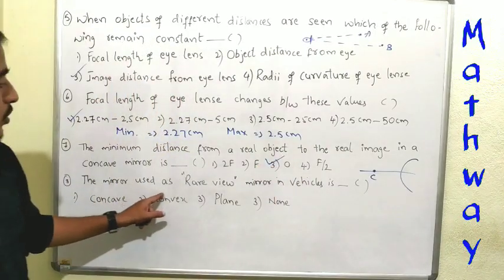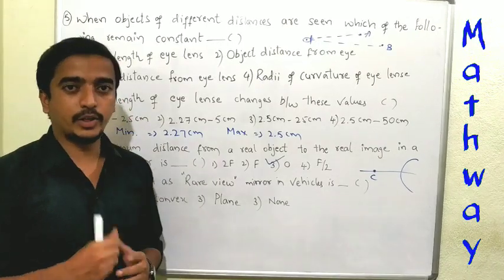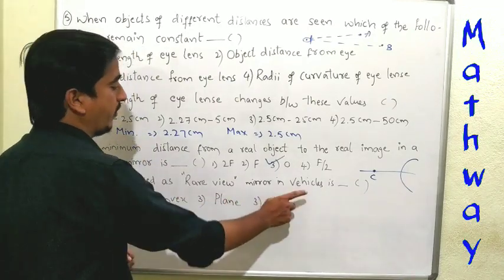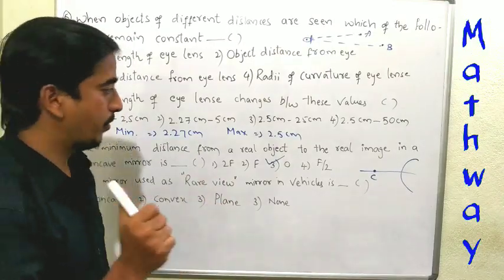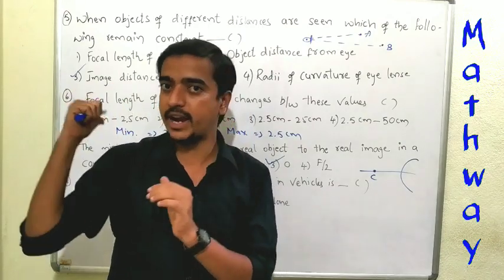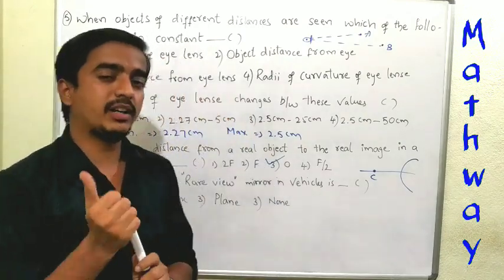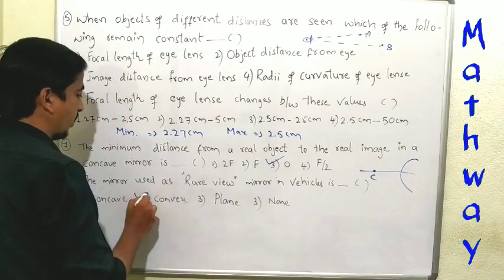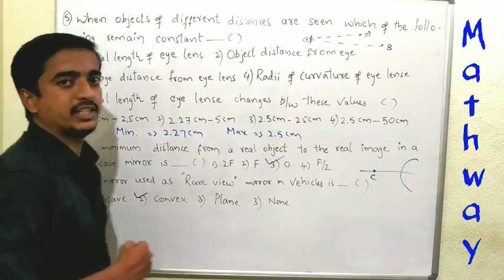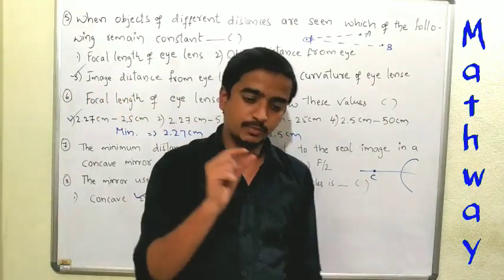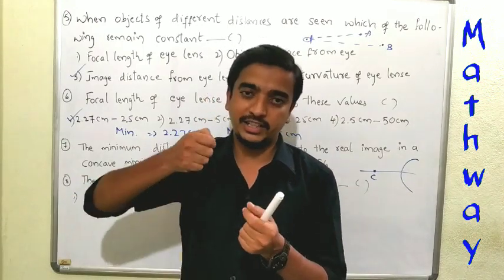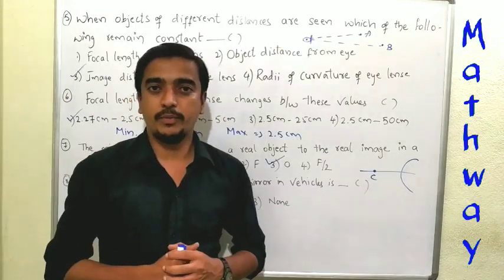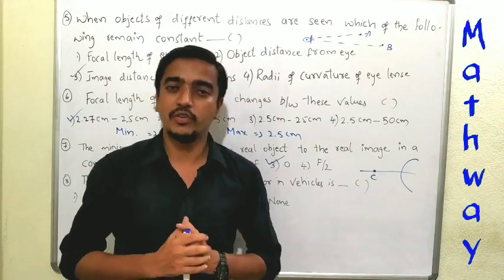Eighth question: the mirror used as a rear view mirror. A rear view mirror converts big objects to small — that is, the image is diminished. The mirror that does this is a convex mirror. So convex mirror is used as a rear view mirror. Dentists use a concave mirror, as concave mirrors enlarge the image and convex mirrors diminish the image.